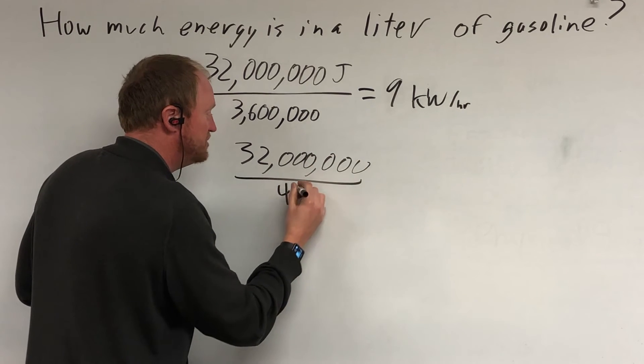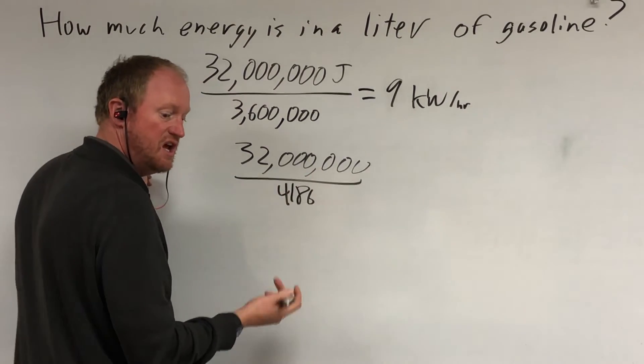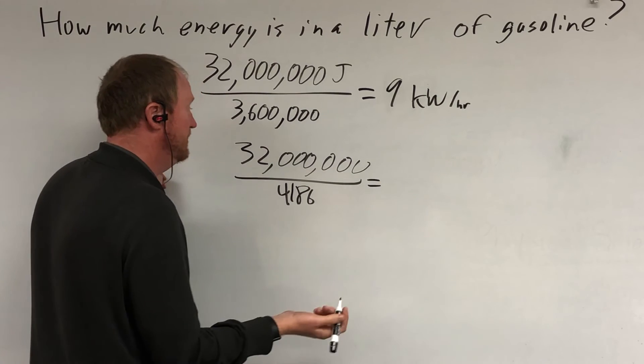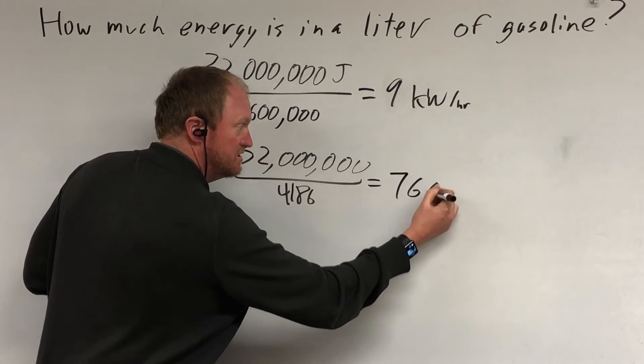We'll take that 32 million and divide it by 4,186, which is the number of joules in a kilocalorie. What you get is about 7,600 kilocalories of energy.